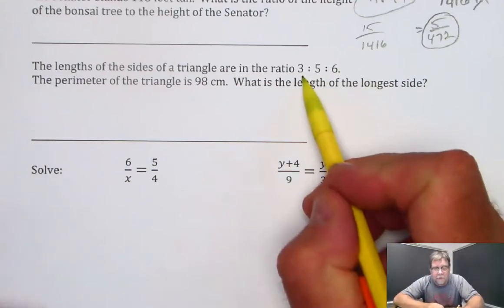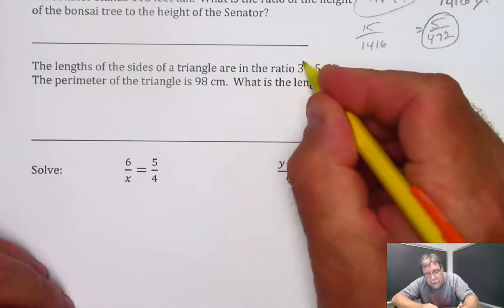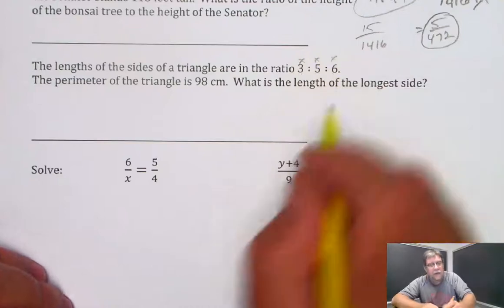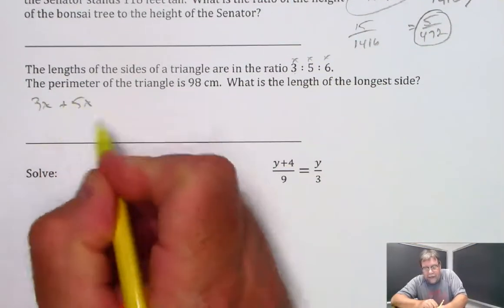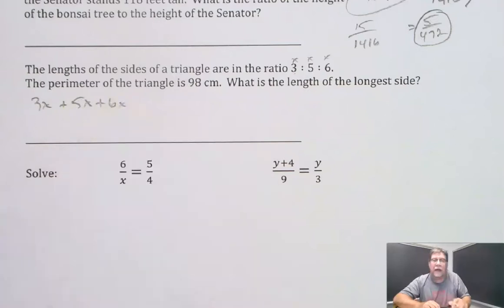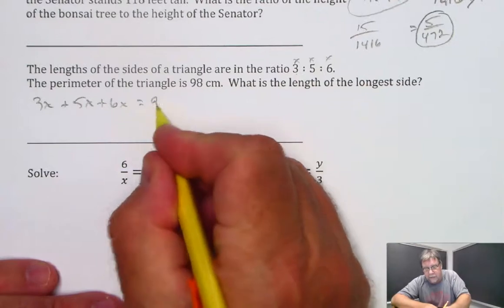So really what you want to think about is instead of thinking of this as 3, 5, and 6, it's a ratio. So we want to actually multiply each of these by x. So I'm going to say 3x plus 5x plus 6x equals 98 centimeters.